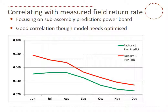To continue correlating with measured field return rates, if we focus on sub-assembly prediction on power boards, we have a great correlation. You can see the factory power prediction — the green line — and the actual field return rate. We've done a rolling average to try and get them closer. The trends are extremely good with good correlation, but the model in this case needs to be optimized a little. So we would change our factoring and get the red and green pretty much sitting on top of each other. We're able to simulate how months are mixed in the field, get an average, make a prediction, look at the data in the field, and then make our model even more accurate.